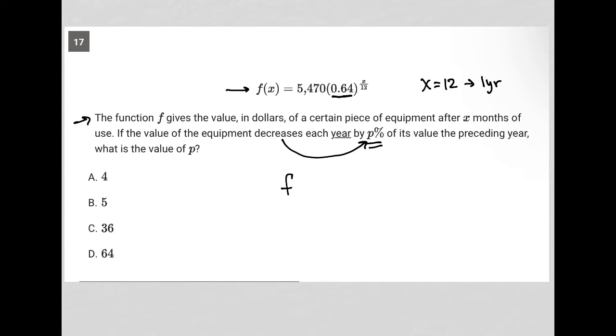If I replace x with 12, I have 5,470 times 0.64 to the 12 over 12. But 12 over 12 is just 1, so I'm going to erase that 12 over 12 and just say that's 1, and that'd be one year.